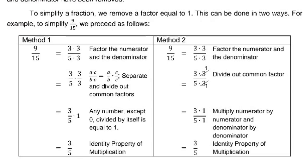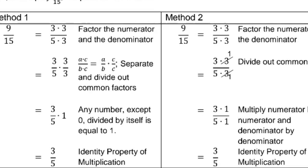Method number 1: For 9 over 15, we can factor 9 as 3 times 3, and 15 as 5 times 3. Then we separate and divide out the common factors: 3 over 5 times 3 over 3. That equals 3 over 5 times 1, since 3 over 3 is 1. So 3 over 5 times 1 equals 3 over 5.